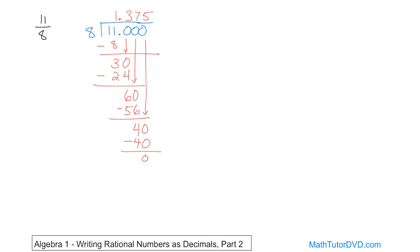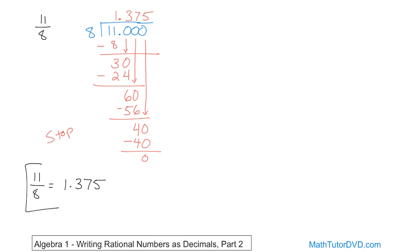Because we got a remainder of zero, we can stop — there's nothing else to do. The answer is that 11 eighths is exactly 1.375. Notice this is bigger than one, as we expected. This is a terminating or finite decimal — it stops. If you type this in your calculator, you're going to get exactly 1.375.